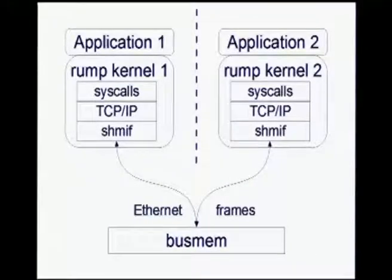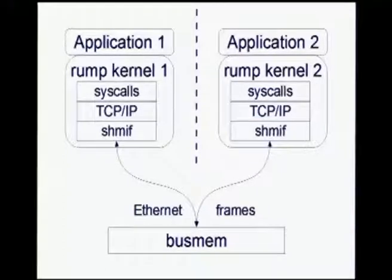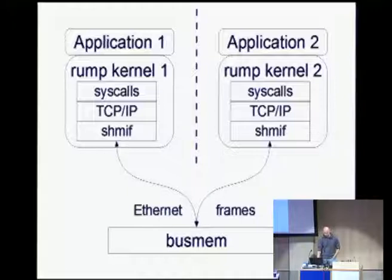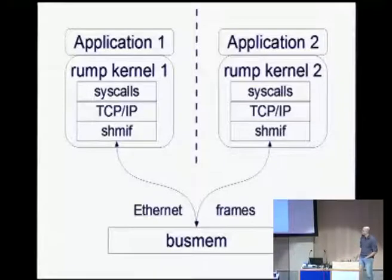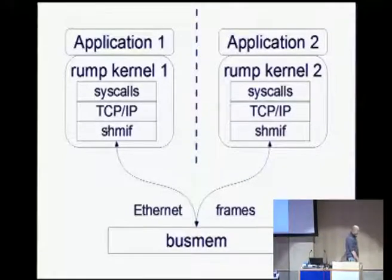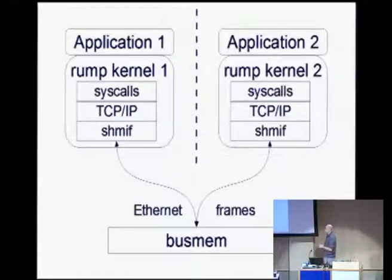Let's do another demonstration. We did file systems — let's do TCP/IP networking this time. I'll run two NetBSD kernel TCP/IP stacks and have them talk to each other. This whole thing runs completely unprivileged. It works similarly to the first example: you have an application layer making calls into the rump kernel, drivers do stuff — in this case the TCP/IP stack — and the bottom layer is the interface driver, which allows multiple rump kernels running on the same host to communicate with each other using shared memory.